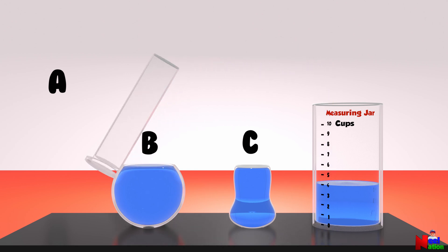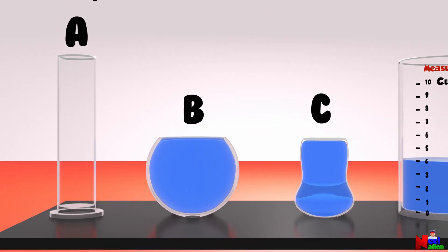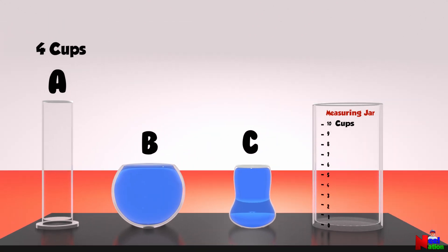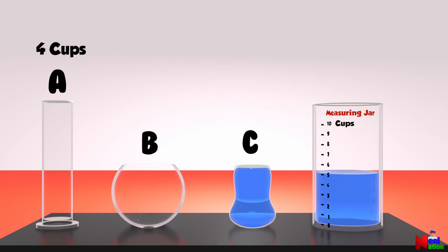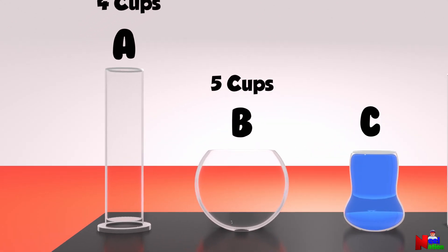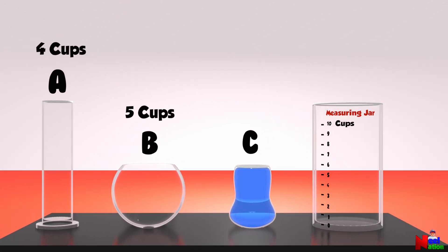Container A holds 4 cups of water. Let's move on to B. Container B holds 5 cups of water. Let's move on to C. And container C holds 2 cups of water.